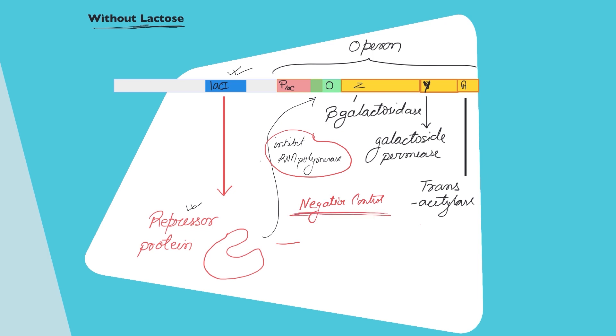Now, the lac operon is also under a positive control. That means binding of something is going to help the operon to produce more. Let us try to understand that.